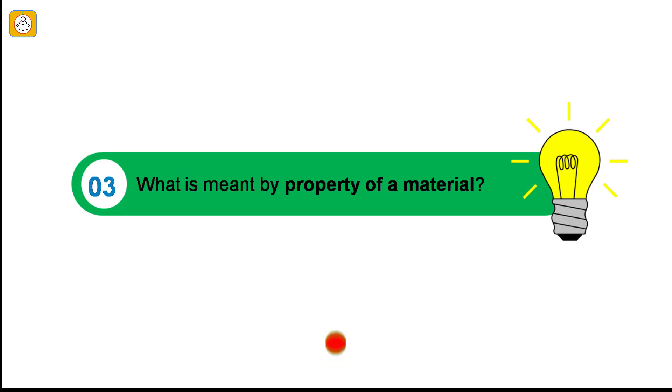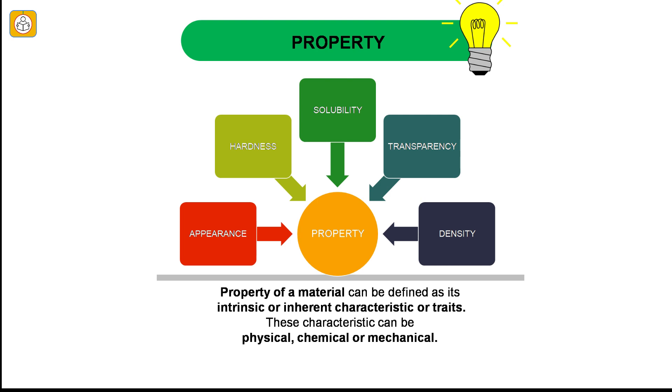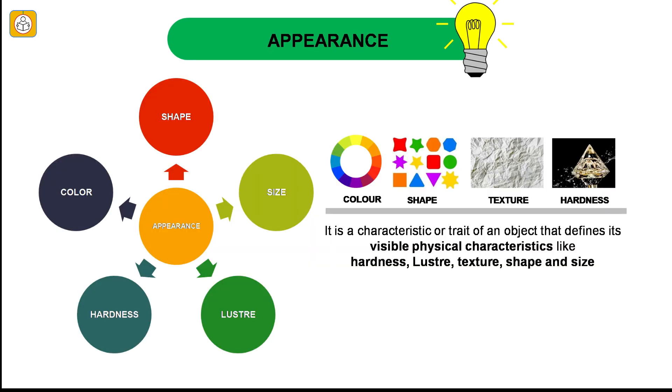Let us answer the next question and understand what are the different properties based on which objects are classified. Question number 3: What is meant by property of a material? Property of a material can be defined as the intrinsic or inherent characteristics or traits. These characteristics can be physical, chemical or mechanical. In this chapter, we will be discussing five characteristics or properties to sort or classify objects. They are appearance, hardness, density, solubility and transparency. Let us start with appearance. It is a characteristic or trait of an object that defines its visible physical characteristics like hardness, lustre, texture, shape and size.